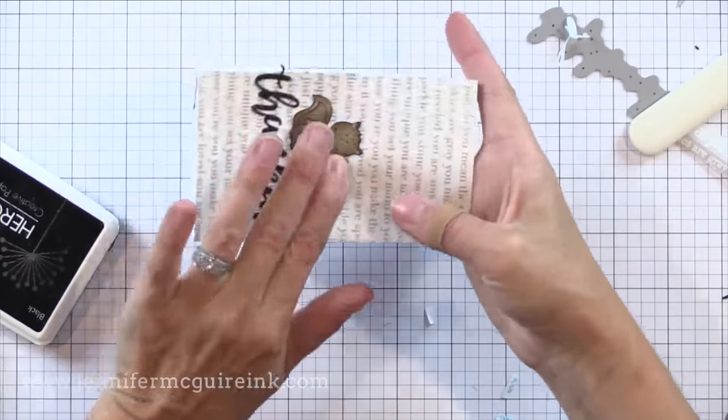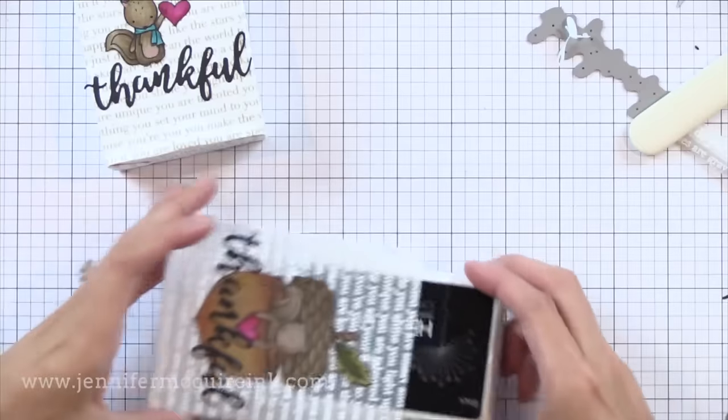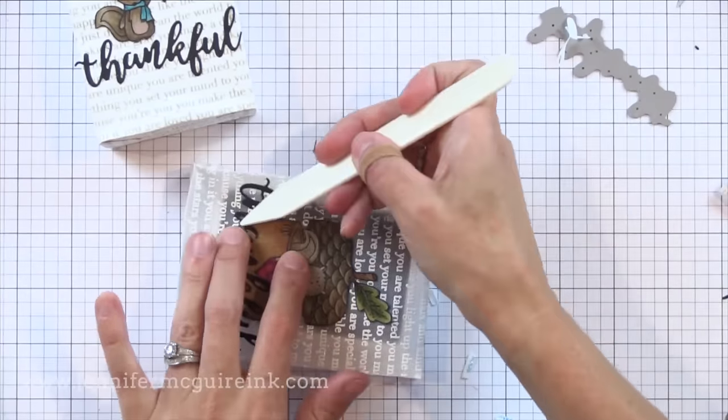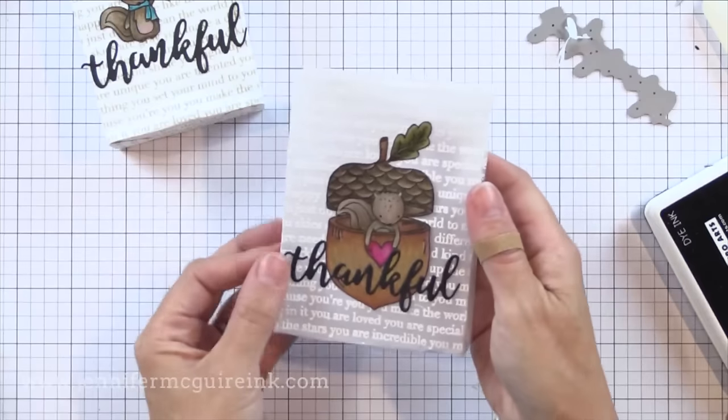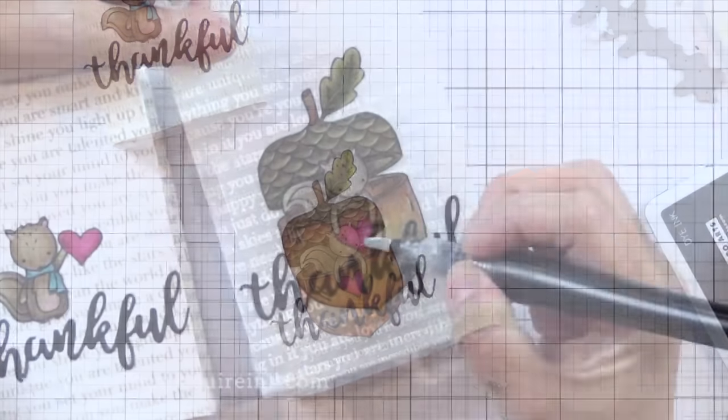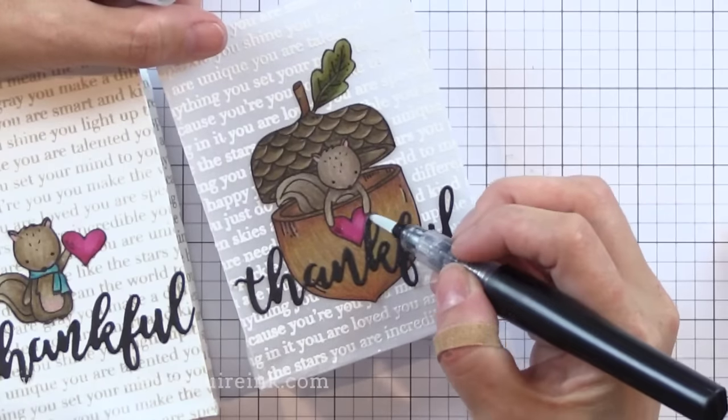Here's where I'm going in with that bone folder to really make sure that those are secured to the front. I like the Stick It double sided adhesive for adding those little intricate die cuts.